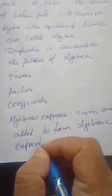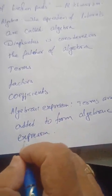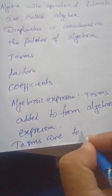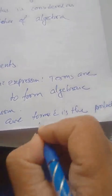A term is formed by the product of factors — some product of literals and a numerical value assigned to the literals. For example, the factors of four are: one, two, and four itself.